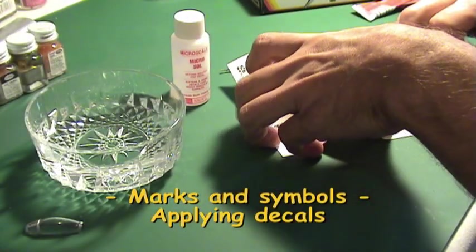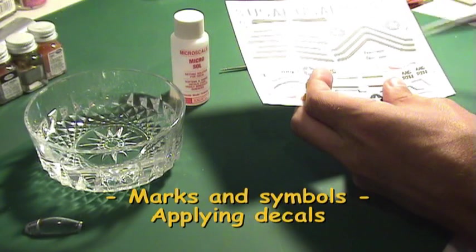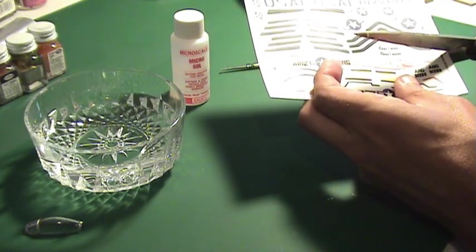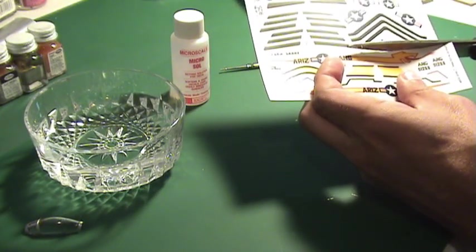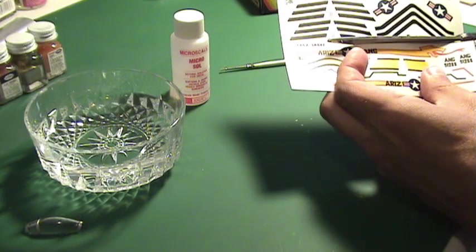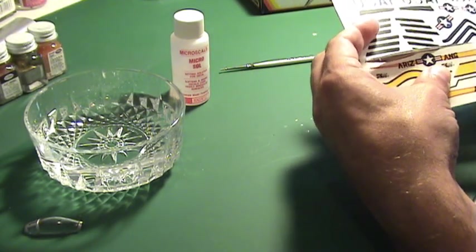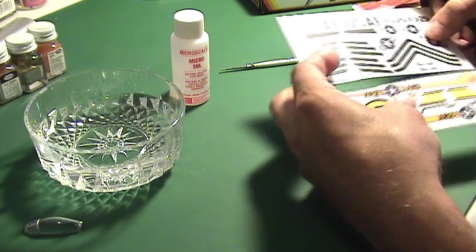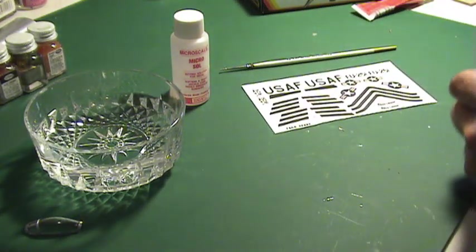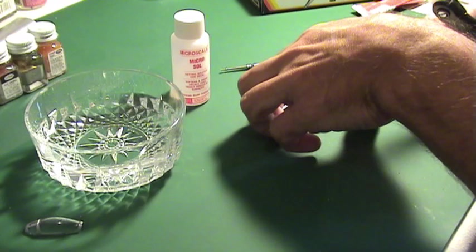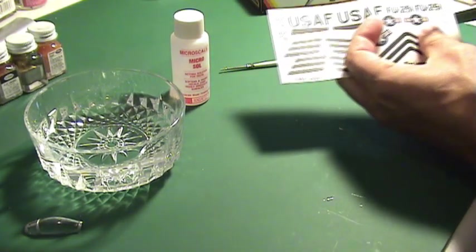Use sharp scissors to carefully cut out each decal from the master sheet and set them aside on your working table. Do not cut the small clear film surrounding each design. If you apply a layer of clear gloss on a flat finish airplane, the clear film will blend in.